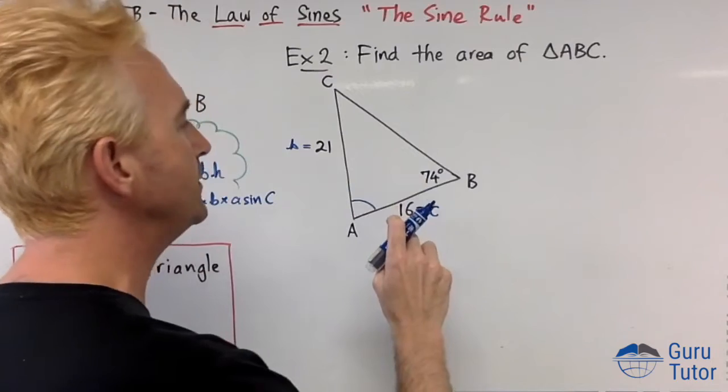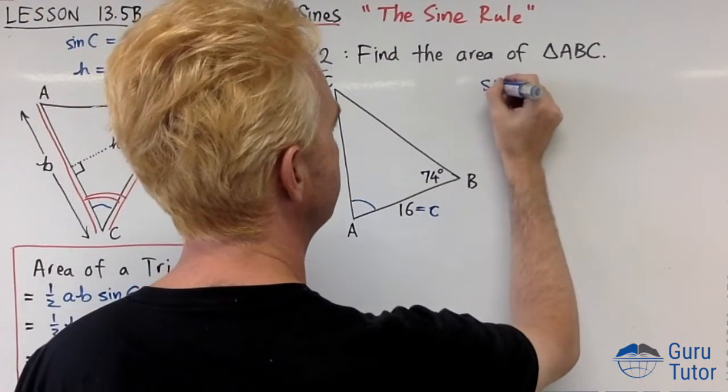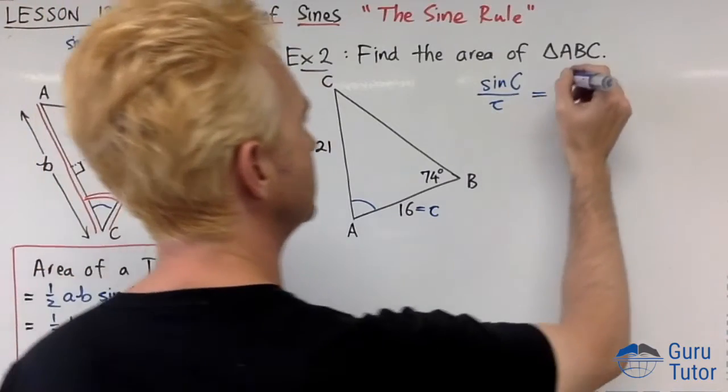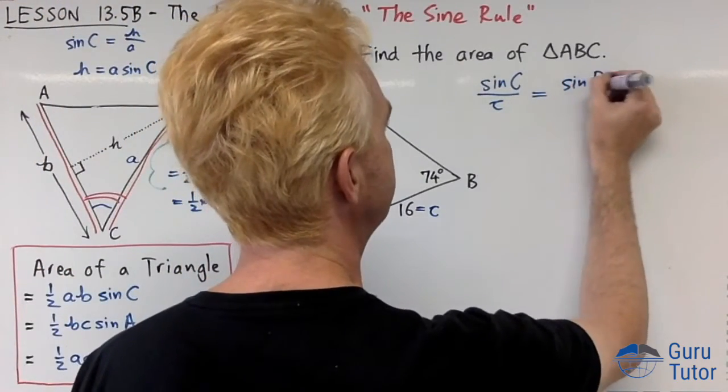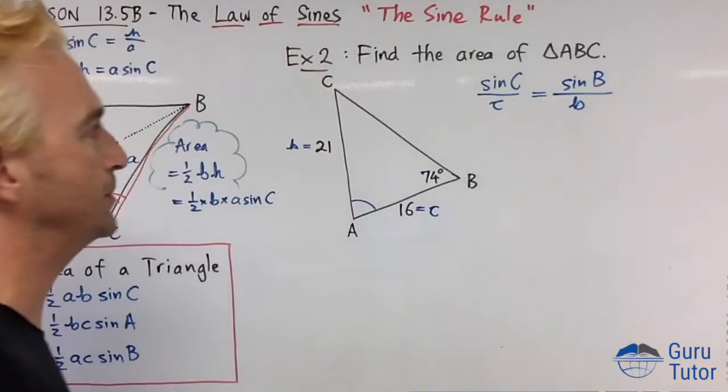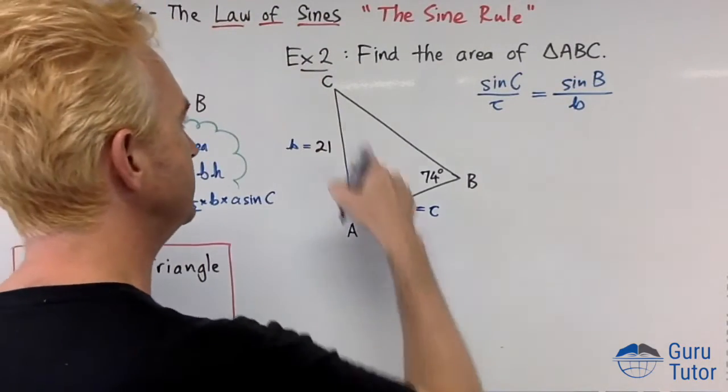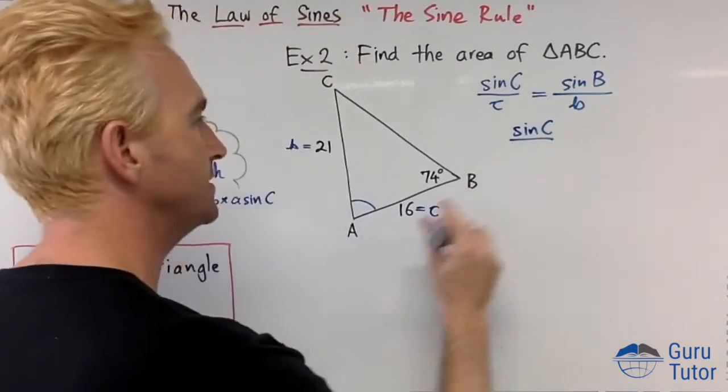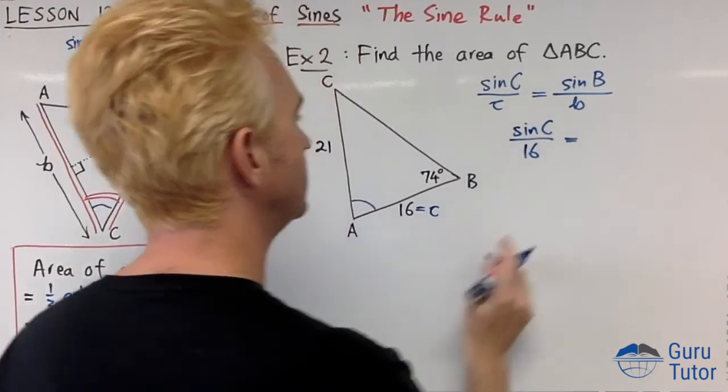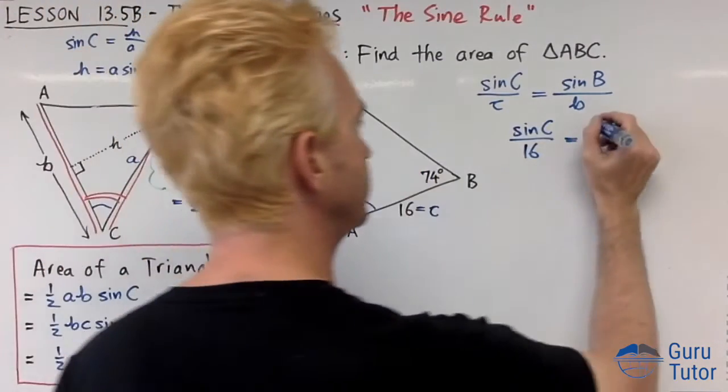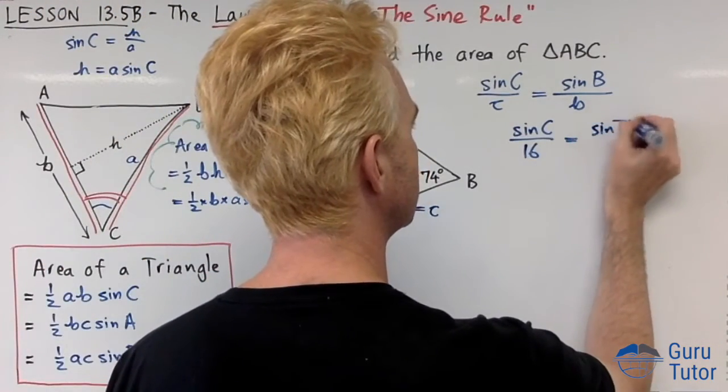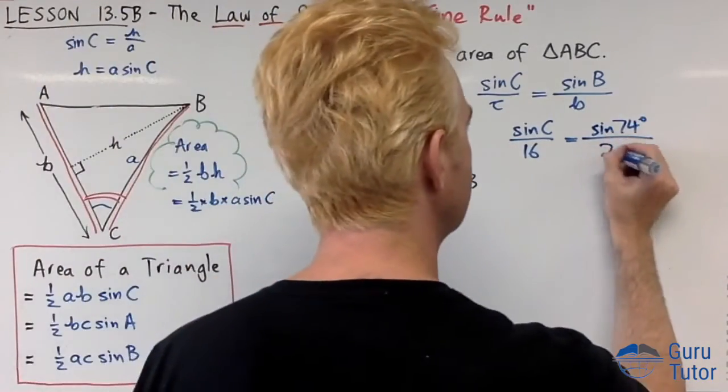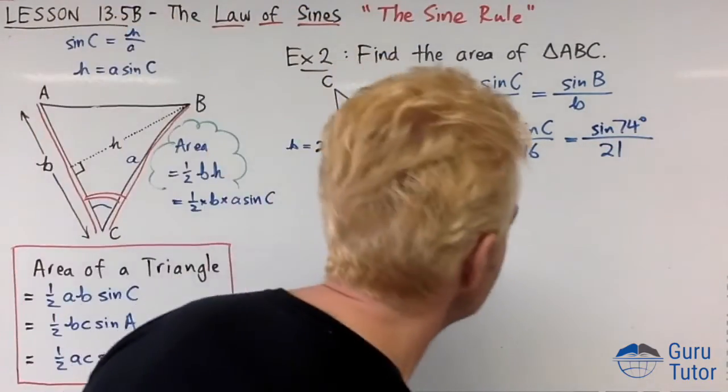We're going to find a missing angle here. Let's do sine C over side c equals sine B over side b. Let's put these in: sine C, don't know C, that's what we're looking for, side c is 16, equals sine B, sine 74 degrees, over side b, 21.